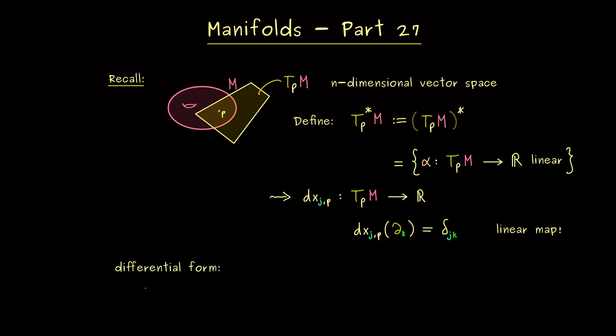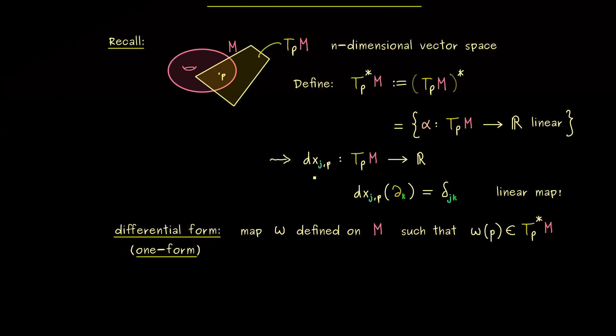Hence, we know what happens to all the basis vectors. And therefore, we can extend this definition to a linear map. And here I can already tell you, such a linear map here we call a one-form. In fact, we will put meaning to the word differential form for a manifold.